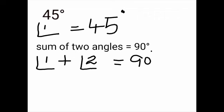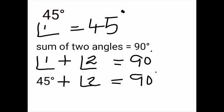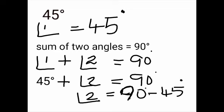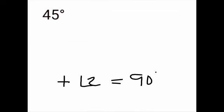We know Angle 1 is 45 degrees. So Angle 2 equals 90 degrees minus 45 degrees, which gives Angle 2 equals 45 degrees. We can verify: 45 plus 45 equals 90 degrees. So 45 degrees is the answer — the complementary angle of 45 degrees is also 45 degrees.